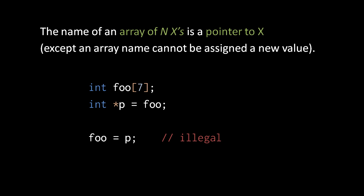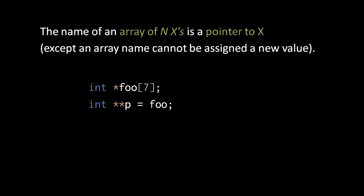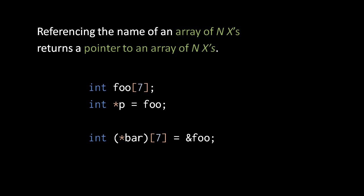As previously discussed, an array name is really a pointer value — note pointer value, not variable, because we cannot assign to array names. We can assign the array name foo to an int pointer variable, but we cannot assign the int pointer variable back to the array name. For an array of seven pointers to ints, the array name is itself a pointer to pointers to ints. For an array of seven arrays of four ints, the array name is itself a pointer to arrays of four ints. If you reference the name of an array of N x's, you get back a pointer to an array of N x's. A pointer to arrays of seven ints value cannot be assigned to a pointer to arrays of nine ints variable.